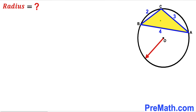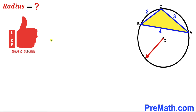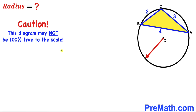Welcome to pre-math. In this video we have got this yellow shaded triangle ABC fully inscribed in a circle with a center O, as you can see in this given diagram, such that the side lengths of this yellow shaded triangle are 2, 3, and 4 units respectively. Our task is to calculate the radius of this circle. Please don't forget to give a thumbs up and subscribe, and please keep in mind that this figure may not be 100% true to the scale.